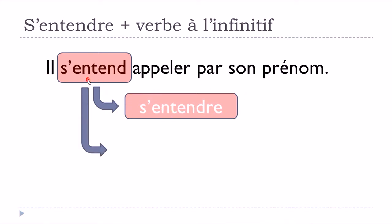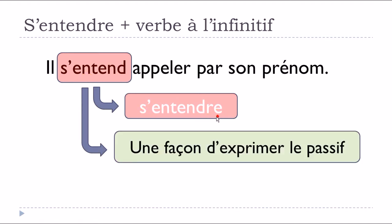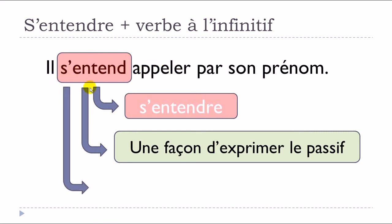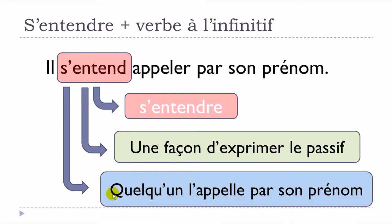The reason why is that you will use s'entendre as a way to express the passive form — une façon d'exprimer le passif. In that case, the subject doesn't do the action, so he's not calling. To get the meaning of the sentence you could say: quelqu'un l'appelle par son prénom — somebody is calling him by his first name.